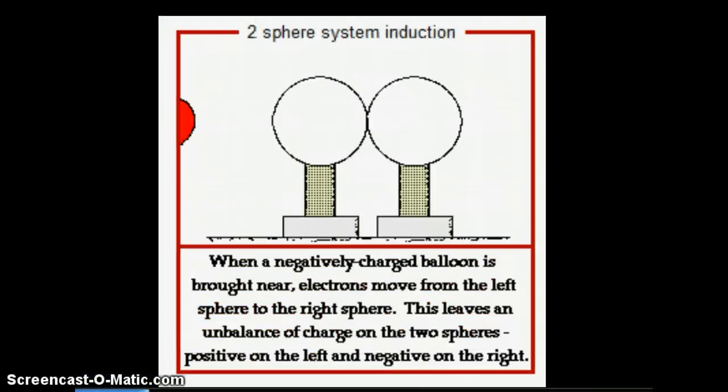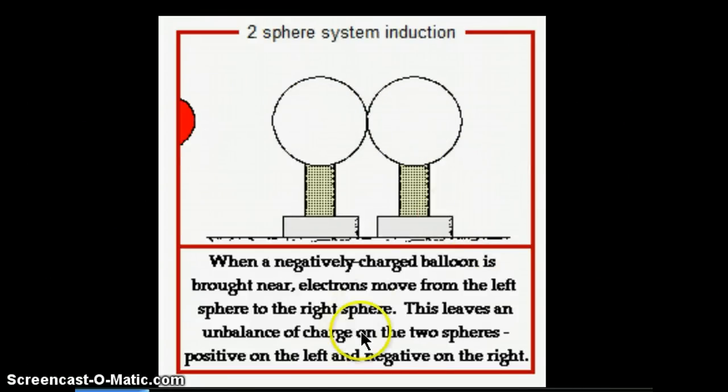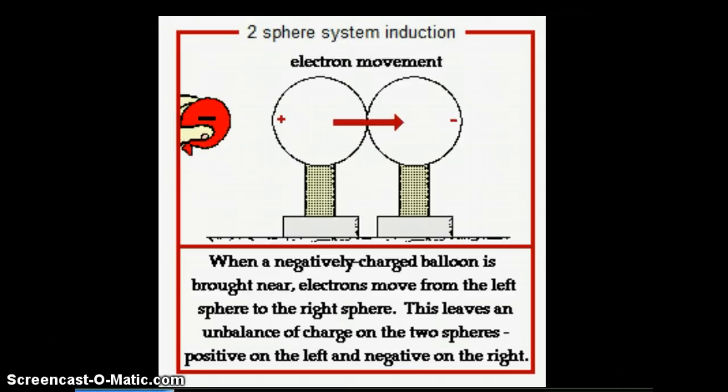This time we're going to look at induction instead of using the ground, we're going to use a second item to take the charge away. So we have two conducting spheres touching. Since they are touching, there is a path for electrons to move from one object to the other. So we're going to bring in a negatively charged balloon.